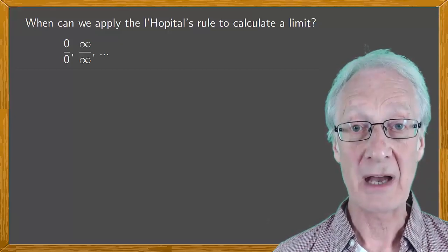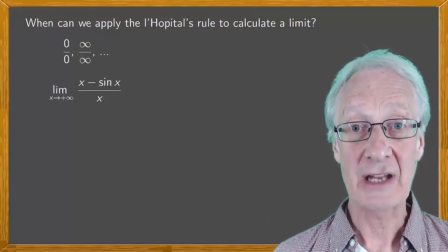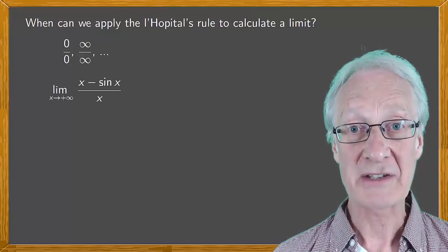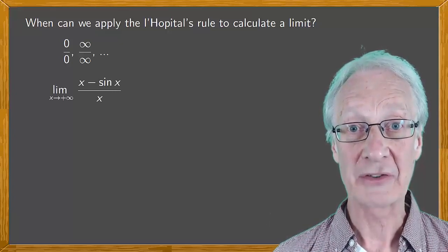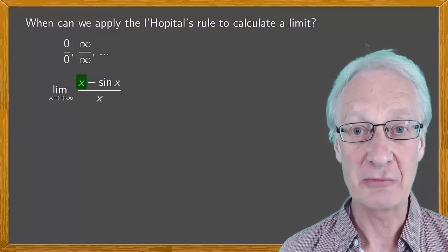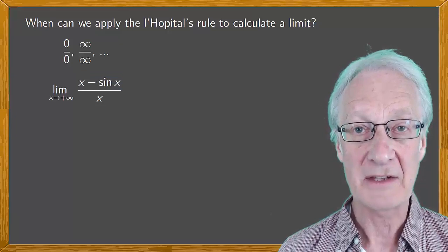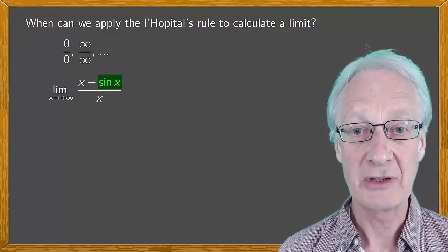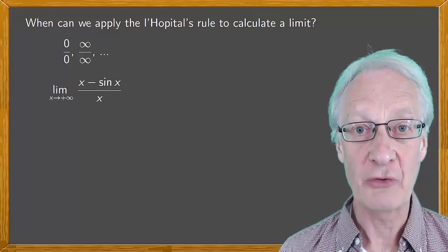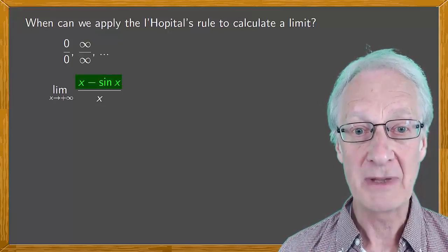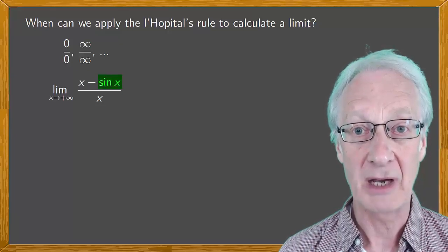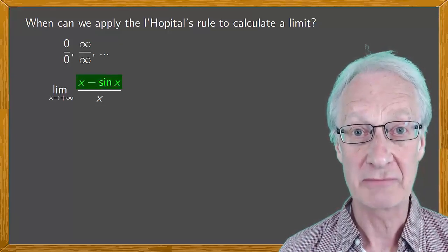As we'll discover when we think about the limit as x tends to plus infinity of (x - sin x)/x. Notice that in the numerator, x tends to plus infinity, and that sin x is bounded between -1 and 1. So overall, the numerator tends to plus infinity minus a number between -1 and 1, which is just plus infinity.